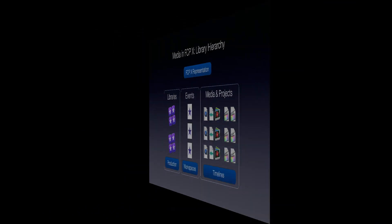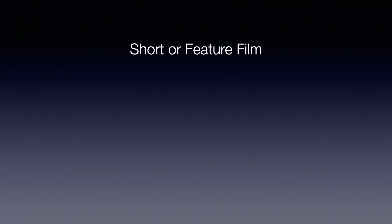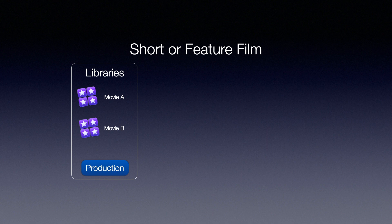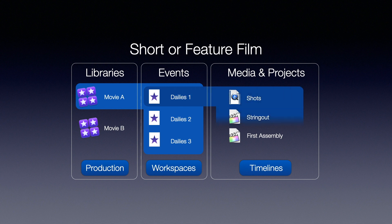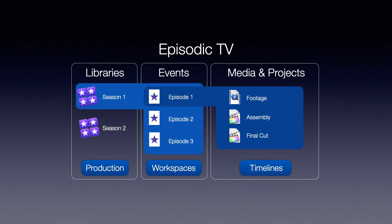Let's look at a couple of examples. For a short film or even a feature, the entire movie could be located in a single library, although for a feature you may have a library for each reel. Taking the example of a short film where the entire movie is held in the library, each event in the library could be for that day's shooting. The media for each of those days would be in each event, and also in each event would be the string-out or first assembly — the actual project — for that day's shooting. Another example is an episodic TV show where each library could be an entire season of the show and each event a single episode, with all the footage and projects related to that specific episode.